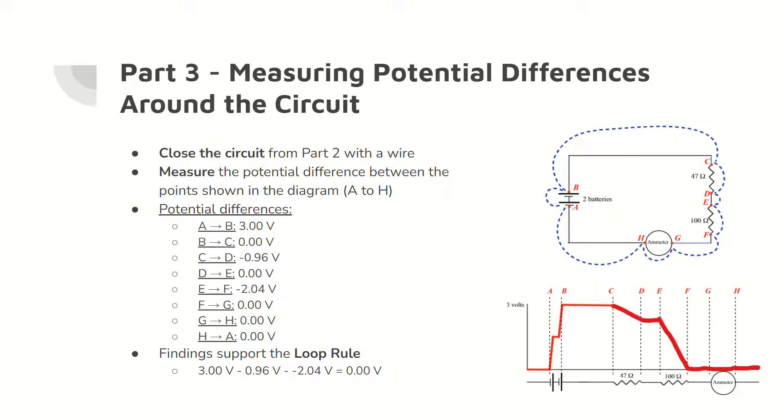In part three, the voltmeter is replaced with wire, and the potential difference at different points in the circuit were measured. Importantly, the potential differences satisfy the loop rule, as the sum of potential differences equals zero volts. The graph in the bottom right shows the sum equaling zero volts.